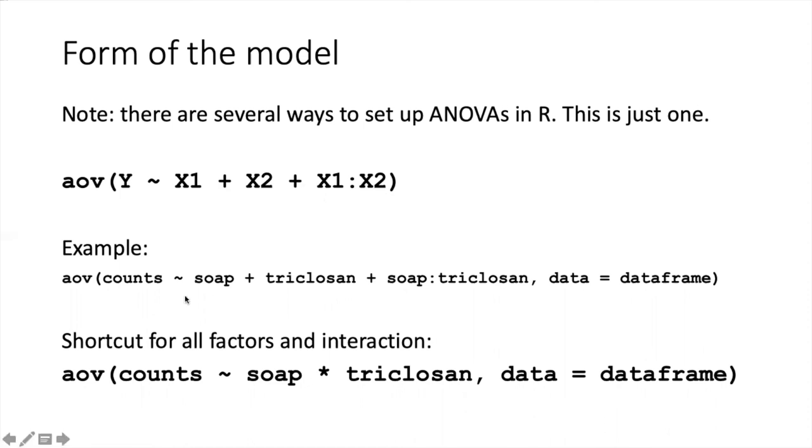If we translate this into the factors that we actually have in our experiment, then counts are the value of Y, soap is the first X factor, triclosan is the second X factor, and then there's a soap-triclosan interaction with the data coming from whatever the name of our data frame is.